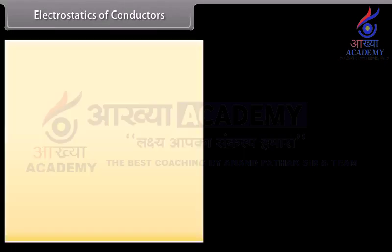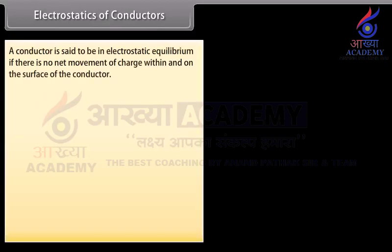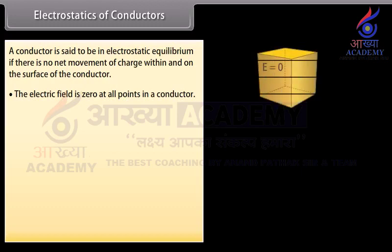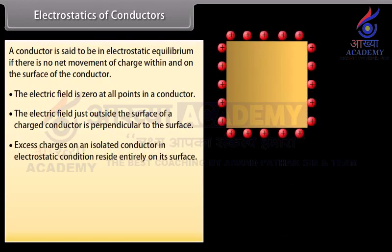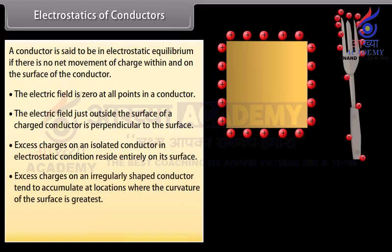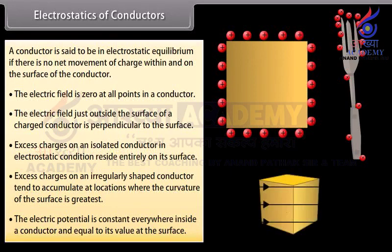Electrostatics of conductors: A conductor is in electrostatic equilibrium if there is no net movement of charge within and on its surface. The electric field is zero at all points inside a conductor. The electric field just outside the surface of a charged conductor is perpendicular to the surface. Excess charges on an isolated conductor reside entirely on its surface. Excess charges on an irregularly shaped conductor accumulate where the curvature of the surface is greatest. The electric potential is constant everywhere inside a conductor and equal to its value at the surface.